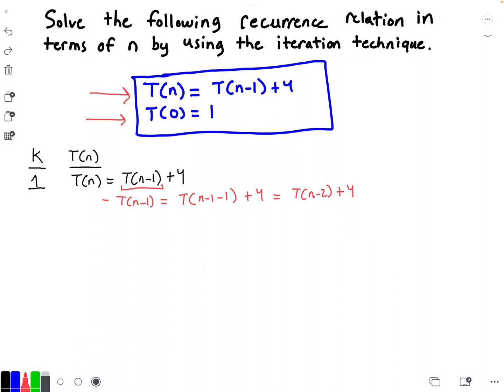Now I can substitute T(n-2) plus 4 for T(n-1) in the second iteration. So for iteration 2, under column K I put 2, and the function T(n) is equal to T(n-2) plus 4, and then I have to add that other 4. T(n-1) has been rewritten in blue and has become T(n-2) plus 4.